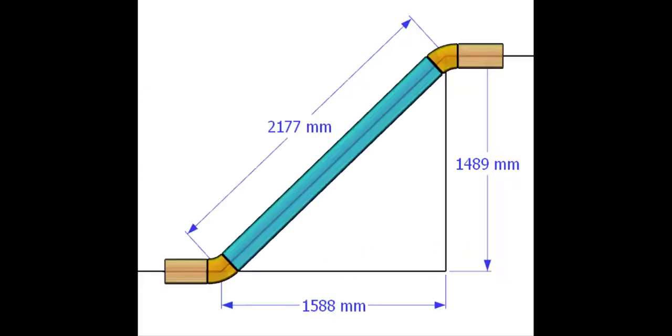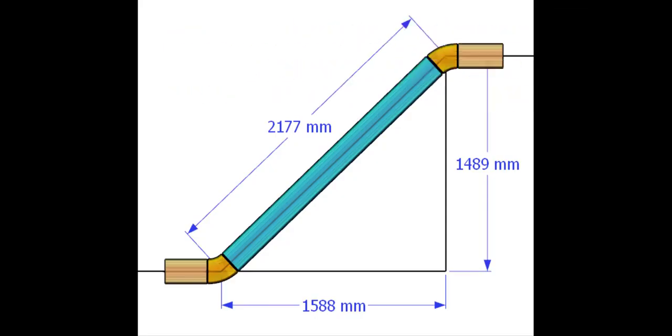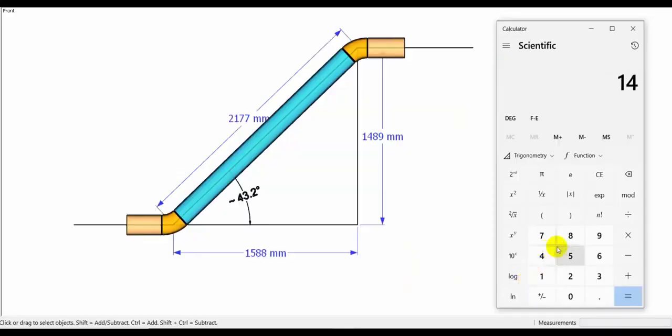Let us calculate the including angle. See the formula. Opposite side divided by adjacent side and then press the shift tan.